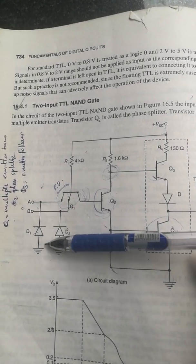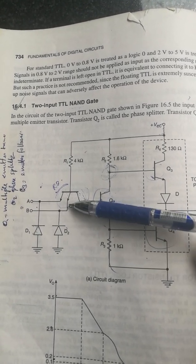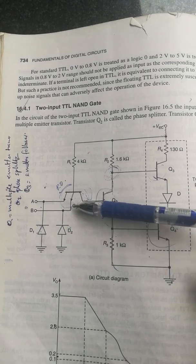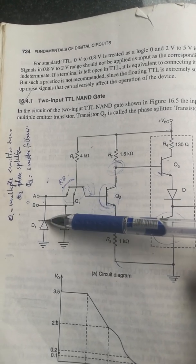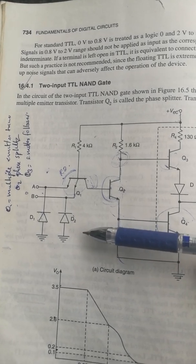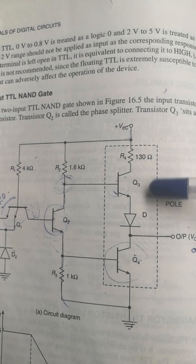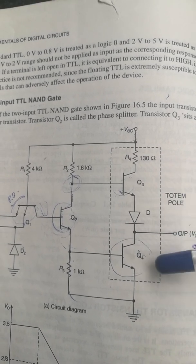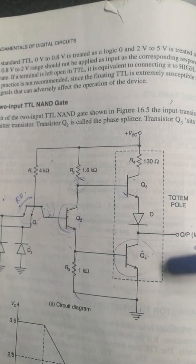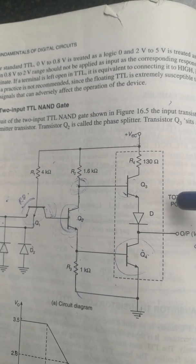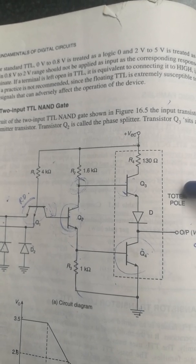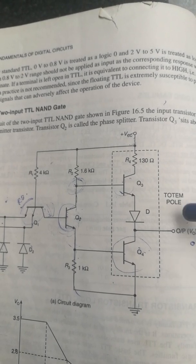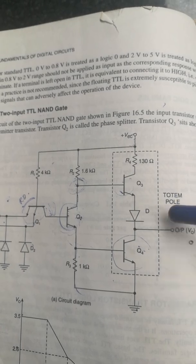We have diodes D1 and D2. On the input side, they protect against negative spikes — D1 and D2 are input protection diodes. The circuit connects to Q3 and Q4 in the totem pole. At any time, only one transistor (Q3 or Q4) is conducting — they cannot both be on simultaneously. Diode DE ensures this criteria.